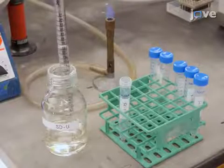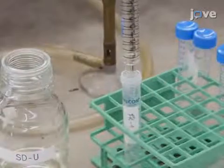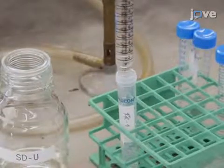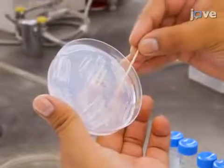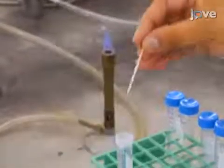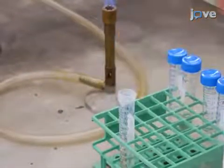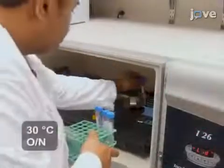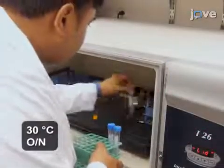Begin this procedure on the afternoon of what will be designated as day one. Start a 5 mL culture in synthetic defined or SD medium without uracil from a freshly streaked petri dish. Incubate overnight in a 30 degree Celsius shaker.